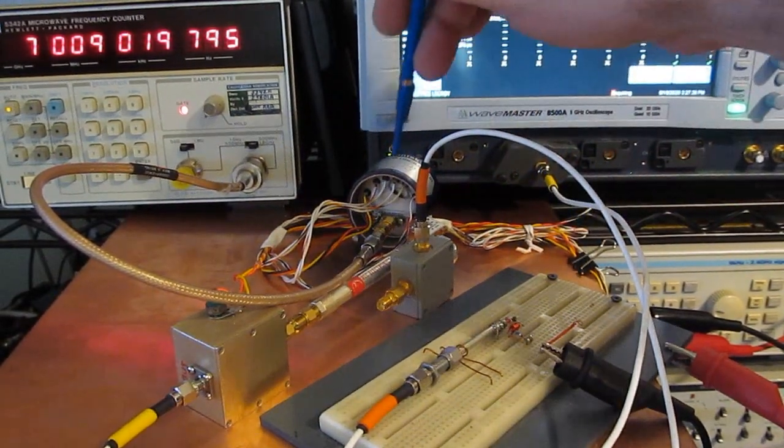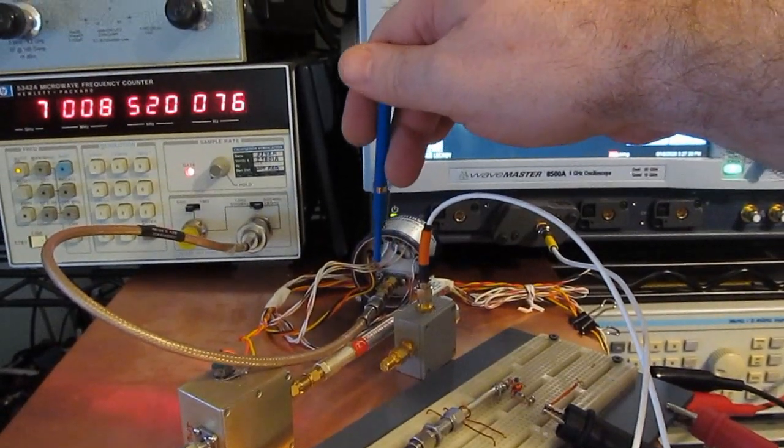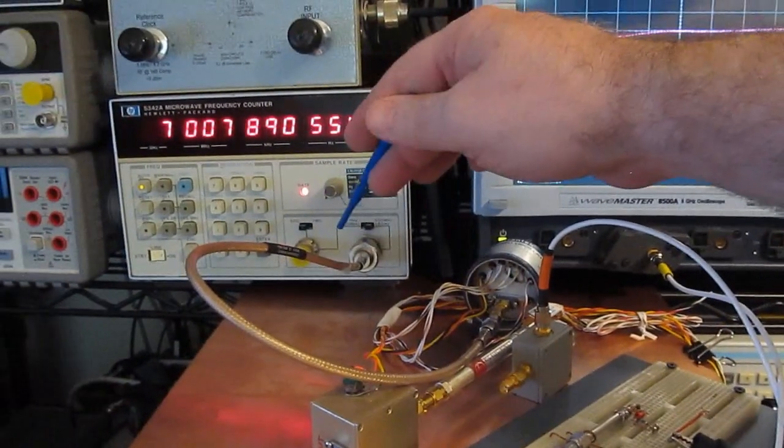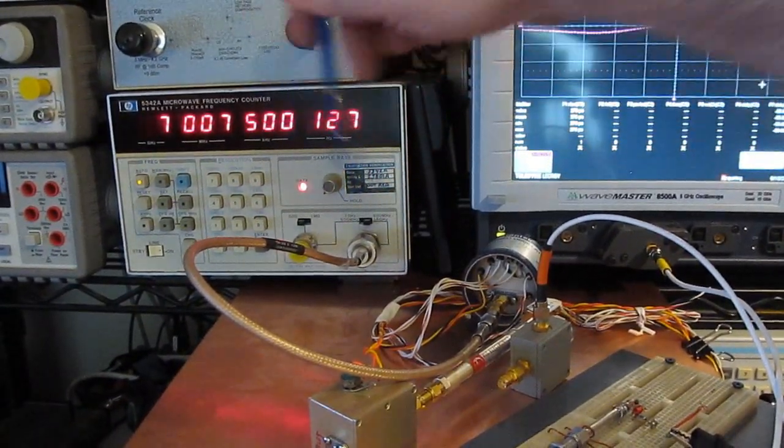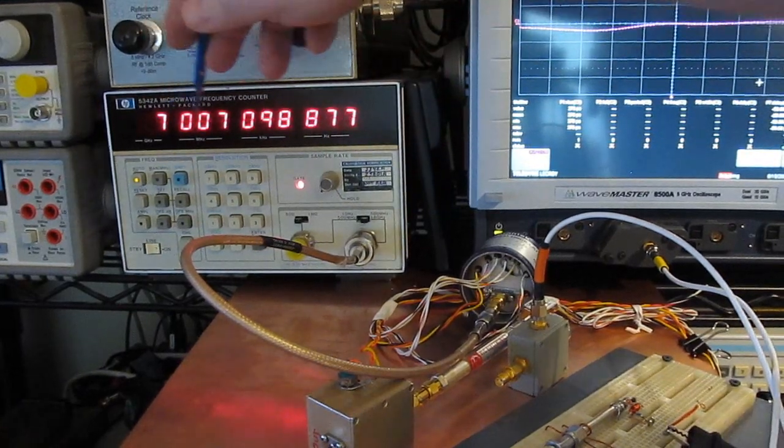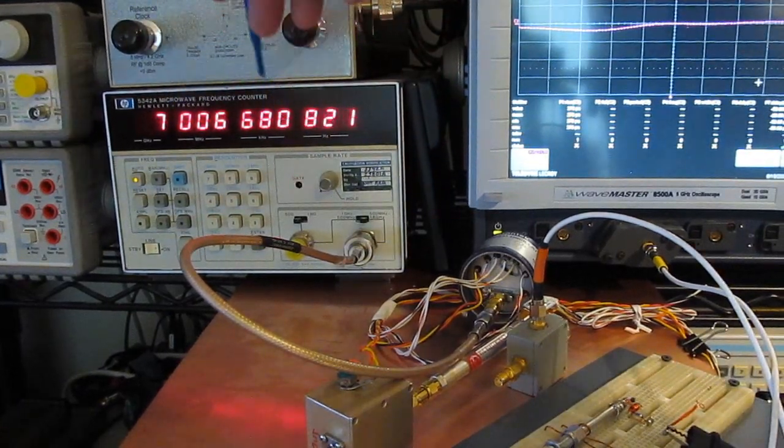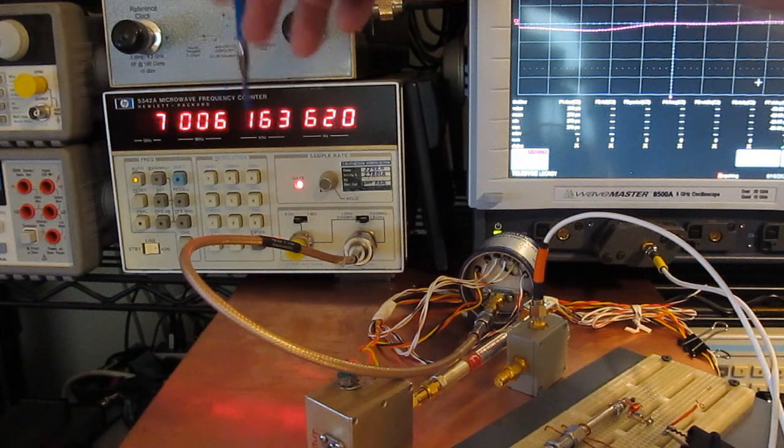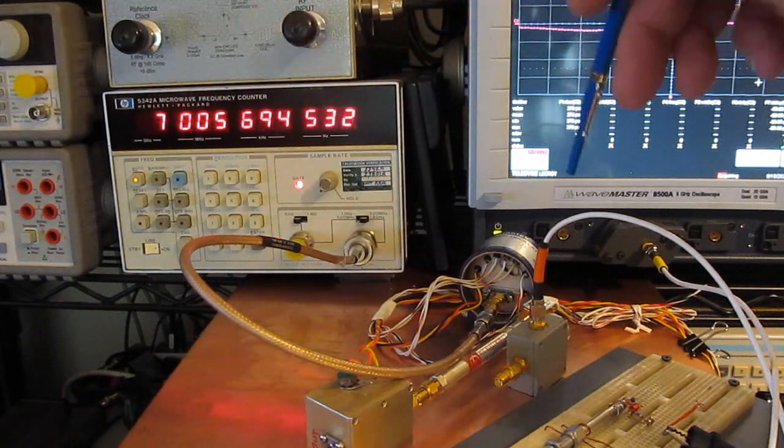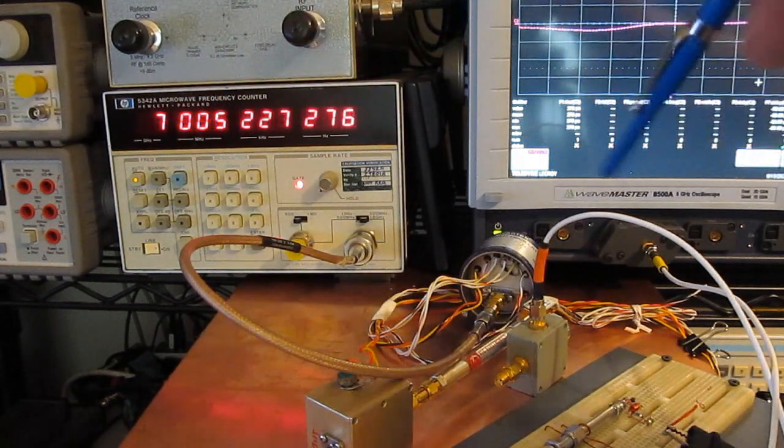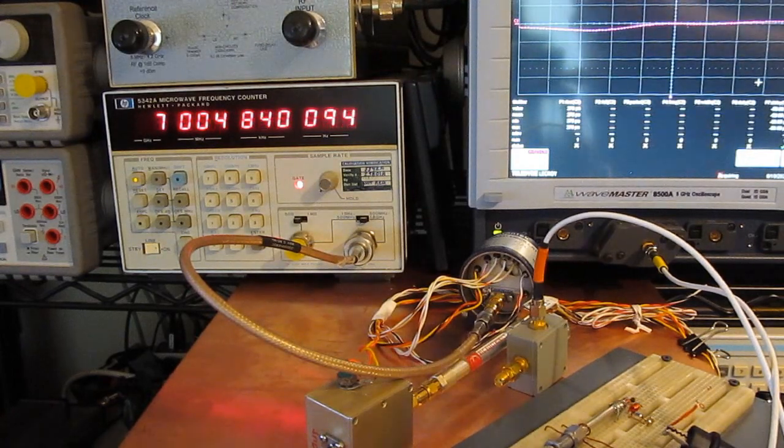You can see that currently I have the Yig attached directly to our microwave counter. In the previous experiments I was running this Yig at 6 gigahertz. You can see it's currently set for 7 gigahertz and you can see it's drifting downwards. I've just turned this thing on. It's going to take a little bit to stabilize but this is good enough for this experiment I think.